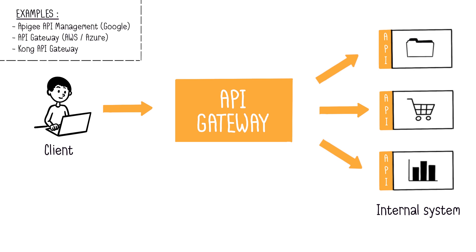Here are some examples of API gateways: Google's APG API Management, AWS API Gateway, Azure API Gateway, and Kong API Gateway.